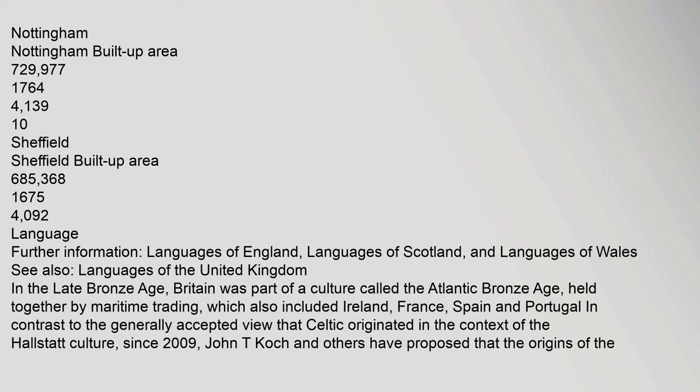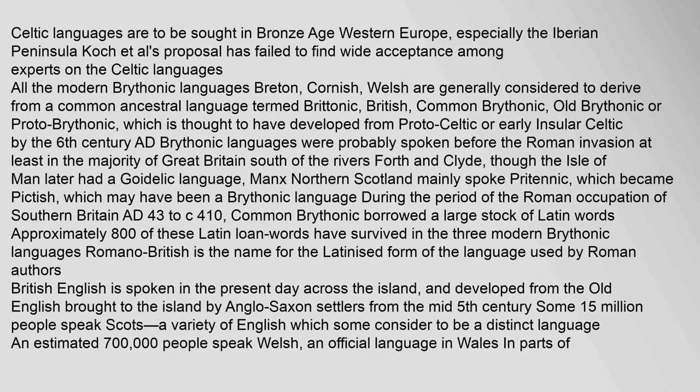Language: In the Late Bronze Age, Britain was part of a culture called the Atlantic Bronze Age, held together by maritime trading, which also included Ireland, France, Spain and Portugal. In contrast to the generally accepted view that Celtic originated in the context of the Hallstatt culture, since 2009 John T. Koch and others have proposed that the origins of the Celtic languages are to be sought in Bronze Age Western Europe, especially the Iberian Peninsula. Koch et al.'s proposal has failed to find wide acceptance among experts on the Celtic languages. All the modern Brythonic languages — Breton, Cornish and Welsh — are generally considered to derive from a common ancestral language termed Brythonic, Old Brythonic or Proto-Brythonic, thought to have developed from Proto-Celtic or early Insular Celtic by the 6th century AD.